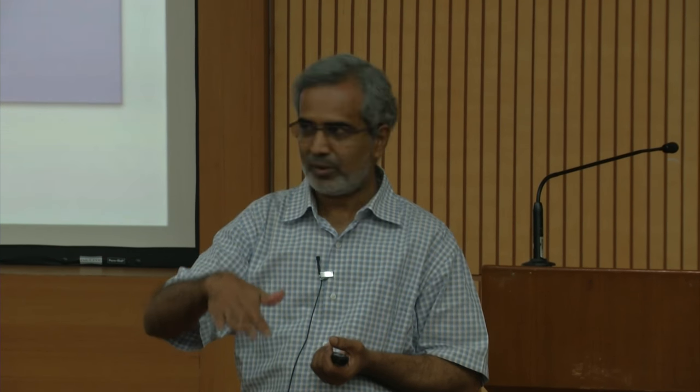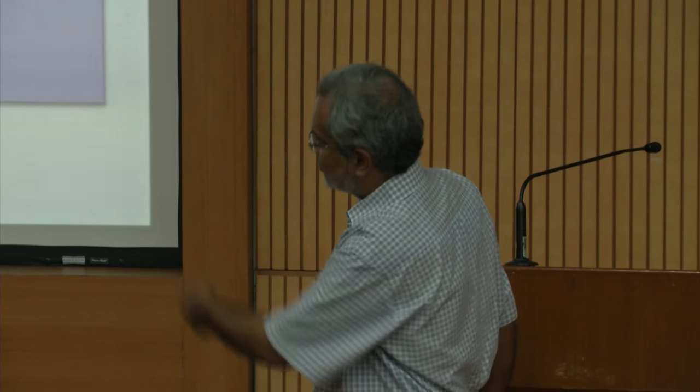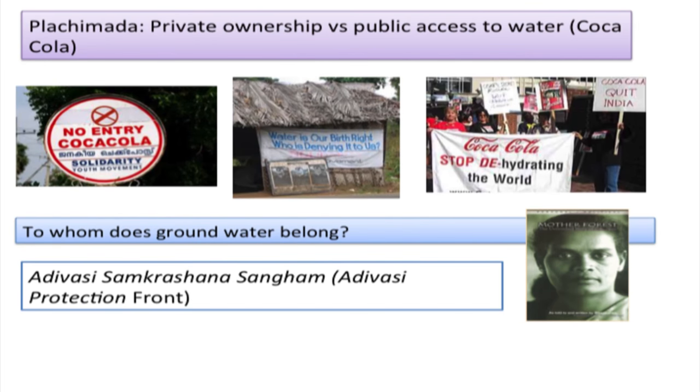Another problem with large dams is water logging in surrounding areas — we lose fertile land and residents live in unhygienic conditions due to dampness. The Indian soil type in most parts is not suitable for flooding irrigation, where fields are flooded for a long time. This has created soil salinity problems causing plant diseases. Water logging irrigation is not suitable for India, but it was imposed through the Green Revolution.